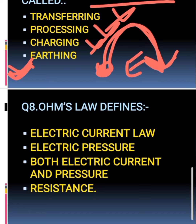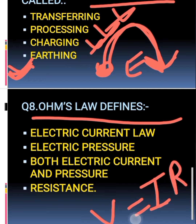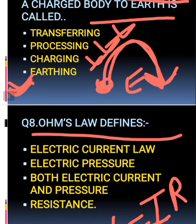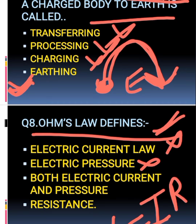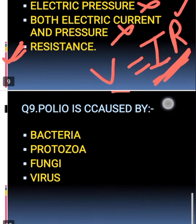The eighth question: what does Ohm's law define? The formula is V = IR, where V is potential difference, I is current, and R is resistance. The options are electric current, electric pressure, or both — but pressure doesn't apply here. The correct answer is resistance, because Ohm's law defines the relationship involving resistance.